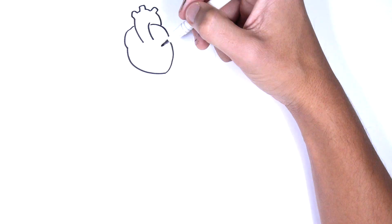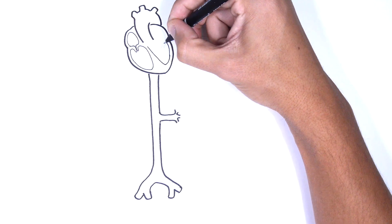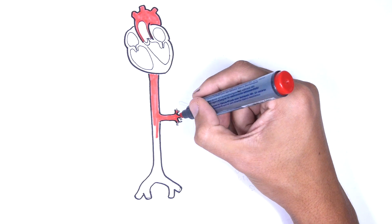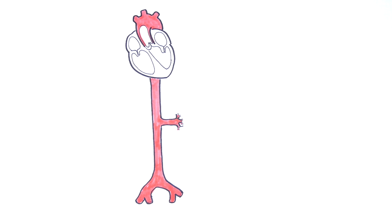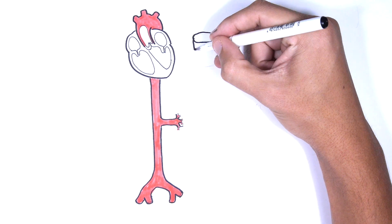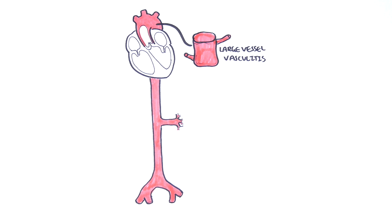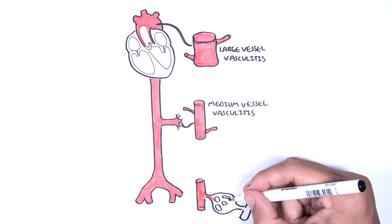Hello, in this video we're going to talk about large vessel vasculitis. This is an overview. Vasculitis is inflammation of the blood vessels resulting in damaged vessels, leading to potential complications such as tissue ischemia and also aneurysms. Primary vasculitides are classified into the size of the blood vessels affected: large vessel, medium vessel, and small vessel vasculitis.